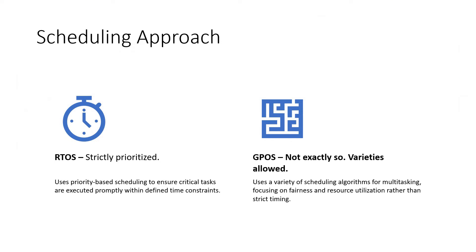The scheduling approach followed in RTOS is strictly prioritized. It uses a priority-based scheduling approach, and critical tasks are definitely executed promptly within defined time constraints. But when you come to GPOS, it is not so. GPOS uses a variety of scheduling algorithms for multitasking, focusing mainly on fairness and resource utilization rather than timing-related concerns.